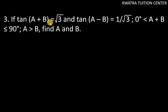It says if tan(A + B) is equal to √3 and tan(A - B) equals 1/√3, and A + B lies between 0° and 90°, and the condition is that A is greater than B.